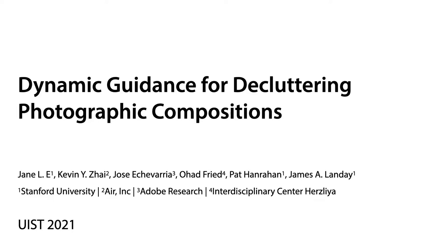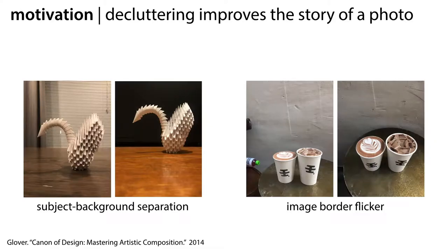Our paper describes the design and implementation of a capture-time tool that aims to help users notice potential clutter in their photos. Our eyes are drawn to regions of high contrast — light on dark and dark on light. Decluttering an image means drawing the eyes directly to the subject, meaning we want contrast near the subject to clarify it. This is called subject-background separation.